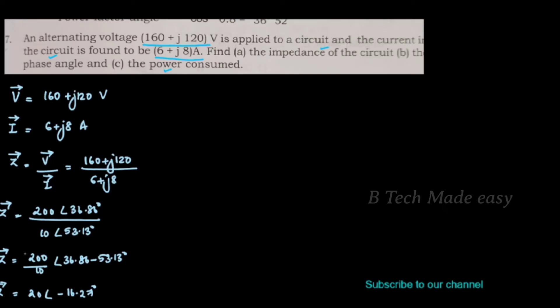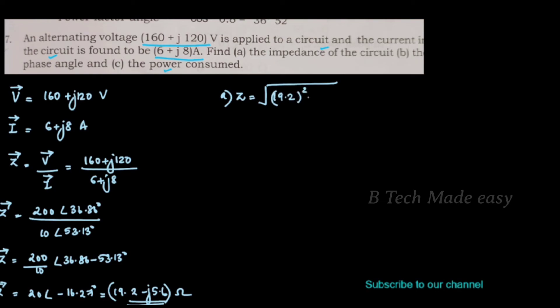This gives Z equals 20 at angle minus 16.27 degrees. Converting to rectangular form, Z equals 19.2 minus j5.6 ohm. The magnitude of impedance is root of 19.2 squared plus minus 5.6 squared, giving 20 ohm.